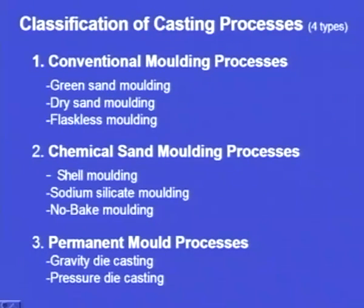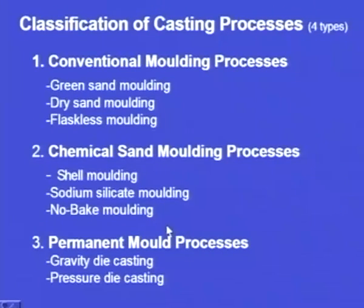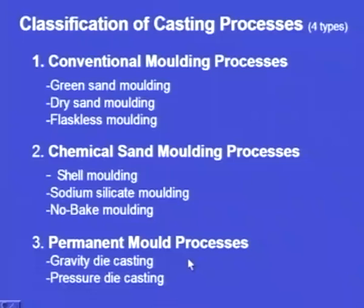We have learnt this in the previous episodes. The chemical sand moulding process is classified as shell moulding, sodium silicate moulding, and no-bake moulding. These also we have learnt in the previous episodes. In the permanent mould process, the material is made up of a metal or an alloy, and this is classified as gravity die casting and pressure die casting.